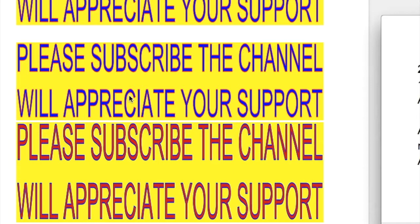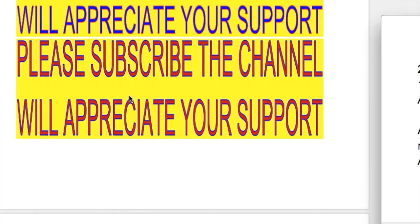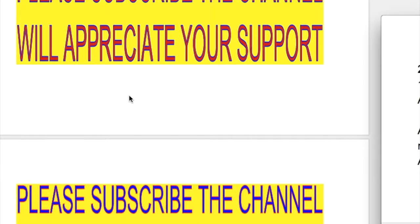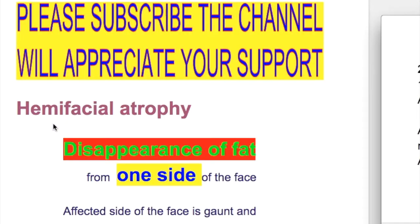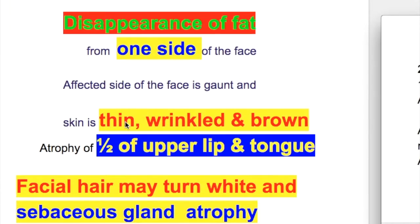In this video, we'll discuss hemifacial atrophy and facial myochemia. In hemifacial atrophy, there is disappearance of fat from one side of the face. The affected side of the face is sunken and the skin is thin, wrinkled and brown.